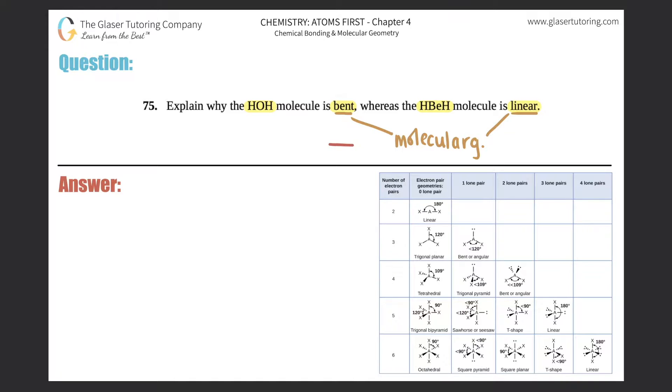It all comes from first knowing your Lewis structure. We can't get away from these, right? Lewis structures are super important. So only from drawing the correct Lewis structure will you then be able to find your molecular geometry of the compound.